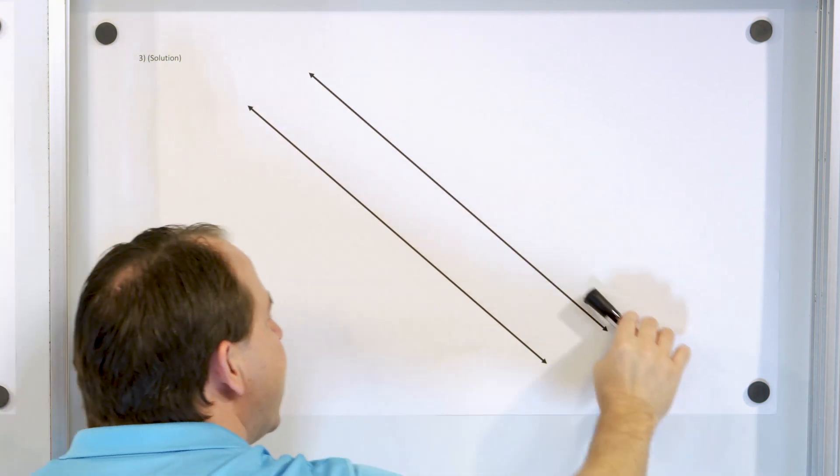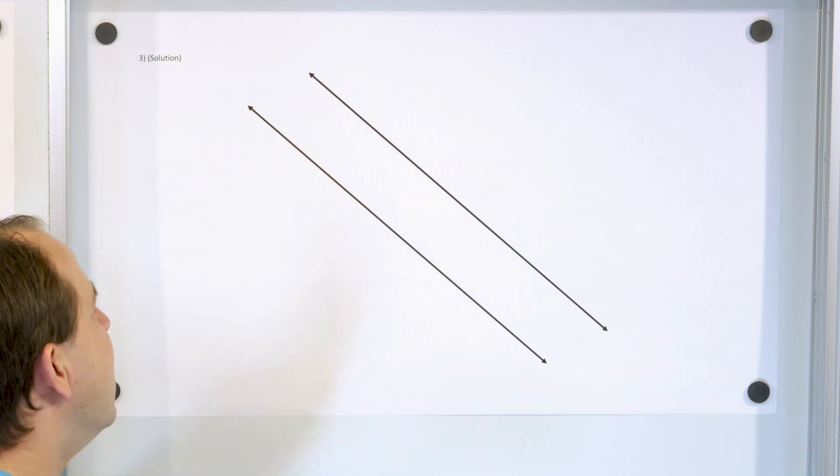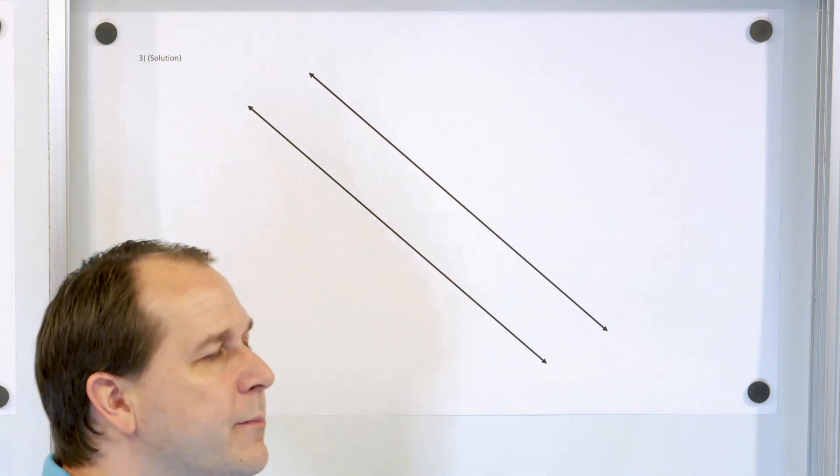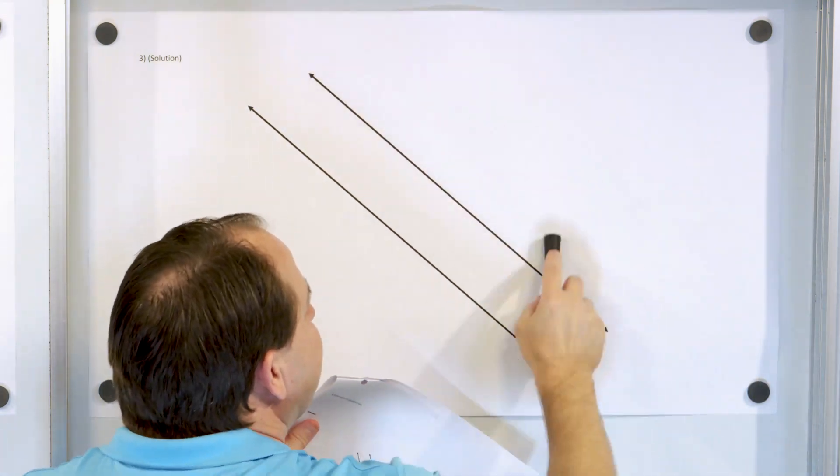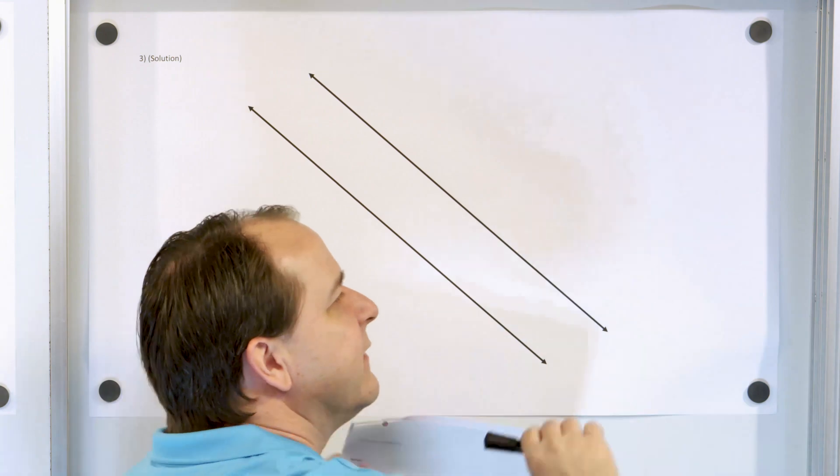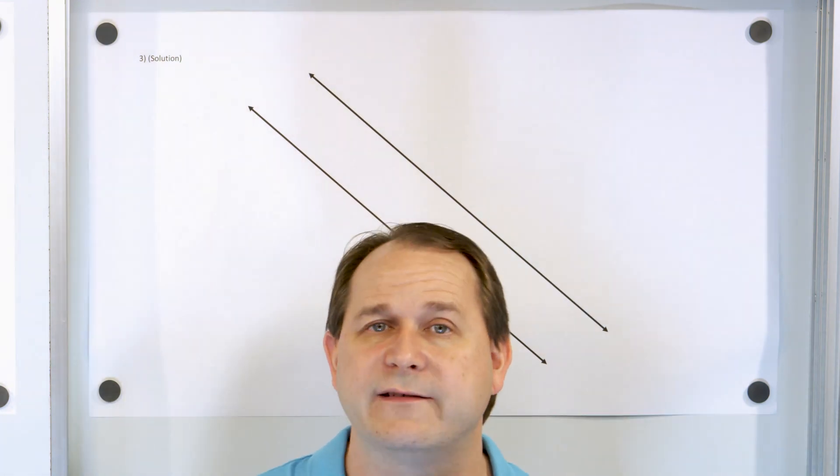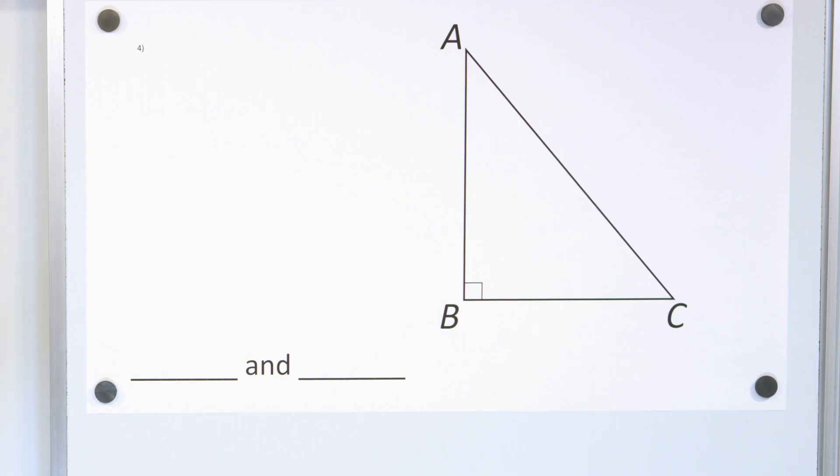Even if I extend these lines off forever and ever, they're never going to cross. So this is what my solution looks like, but your lines could look like this at another angle, as long as they don't cross. They can even go straight up and down or straight horizontal, as long as they don't cross.